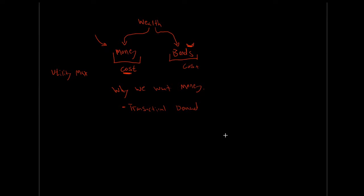Transactional demand is the demand we were just talking about. We know roughly what our monthly budget is — how much is going towards rent, cell phone, car payments, insurance, groceries, and so on. We have an idea of how much money is going to flow out. We want to maintain enough money to satisfy this transactional demand so that every time we go to buy groceries, we don't have to pull bonds out of the bond market facing transaction costs and time costs. And if prices were to go up or if we decided to buy more stuff, we'd need more money to satisfy that transactional demand.